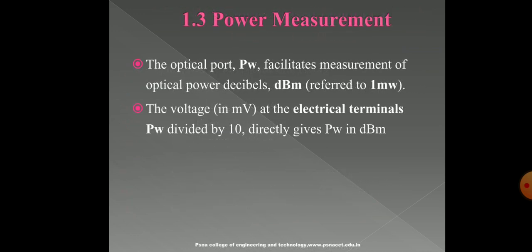Next, we discuss power measurement in this experiment. The optical port PW facilitates measurement of optical power in decibels (dBm) referred to 1mW. The voltage in mV at the electrical terminals PW divided by 10 directly gives PW in dBm. For example, minus 100mV measured across PW is equivalent to minus 10 dBm of optical power, which when converted to a linear value corresponds to 0.1mW or 100μW. It is to be noted that the optical power meter has been calibrated at 660nm; readings for other wavelengths must be corrected manually.